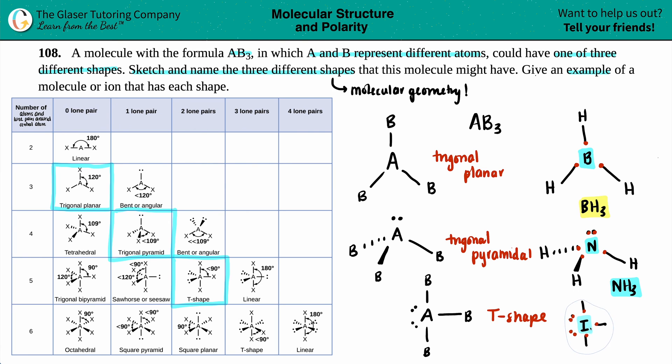And the chlorines, you know, they have the octet as well, but I'm not going to draw all the dots around them. So this one would just be ICL3.